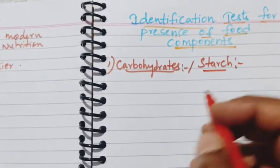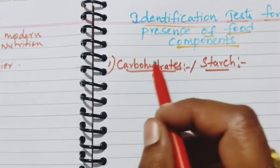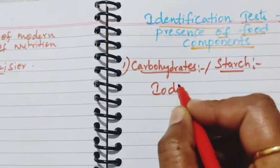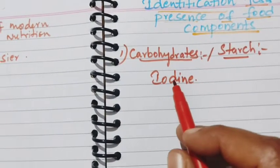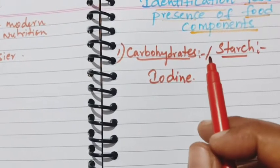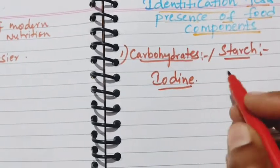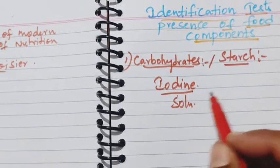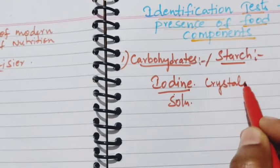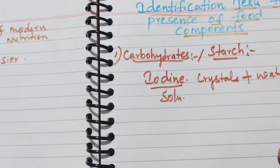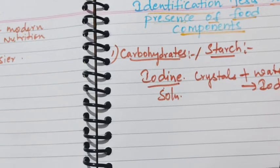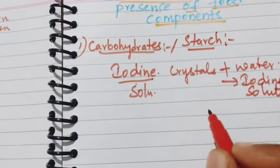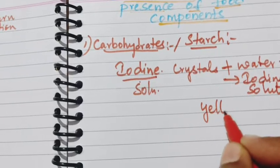Here is the test for starch or carbohydrates. For testing the food item for carbohydrates or starch, we need the chemical iodine. Iodine is the chemical required for testing the food item for starch or carbohydrates. Iodine is in the form of crystals, so firstly we have to prepare the iodine solution. We take the iodine crystals and add a little bit of water to make iodine solution. After preparing, the iodine solution will be yellowish brown in color.